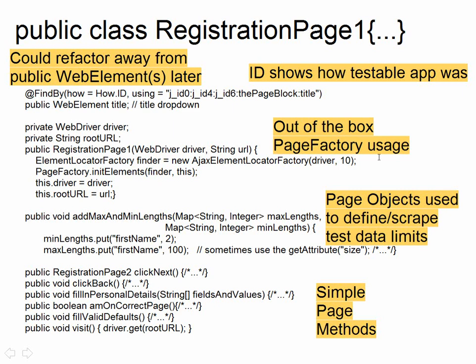Here I'm finding something using an ID. And you can see just how testable that app was — the ID would change randomly between releases sometimes. There was no obvious reason why it would change; it would just change. There was no emphasis on making the app testable, so we had to deal with it. But you deal with that in a page abstraction layer where you only have to make that change once.